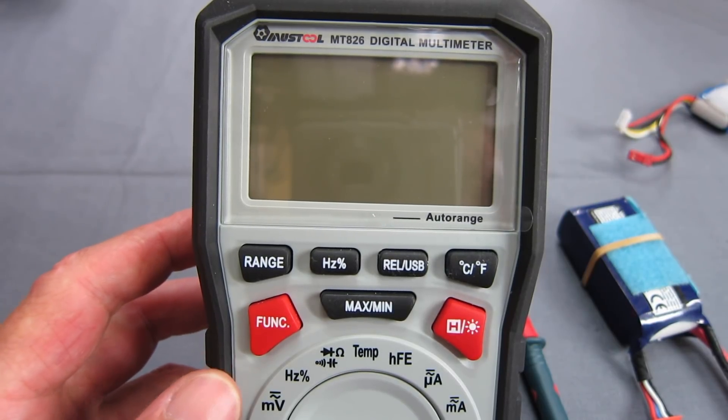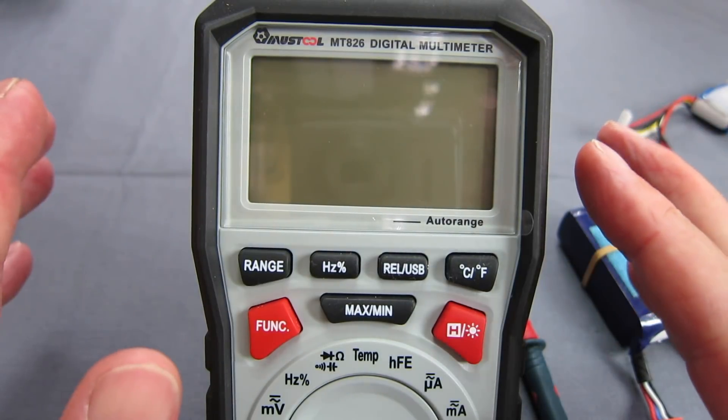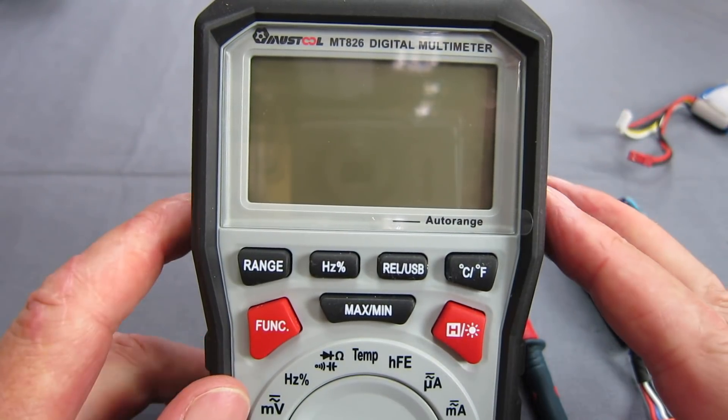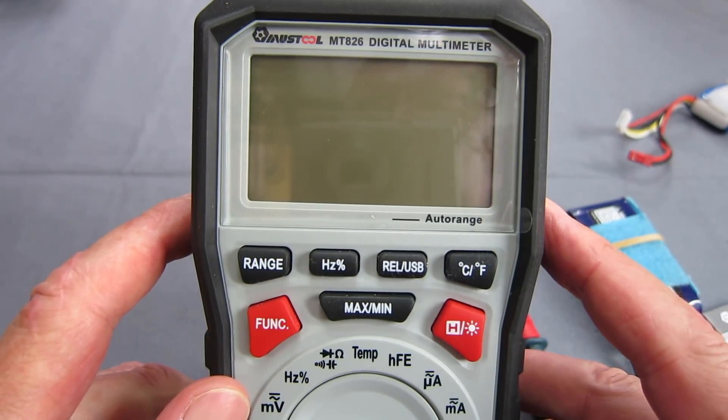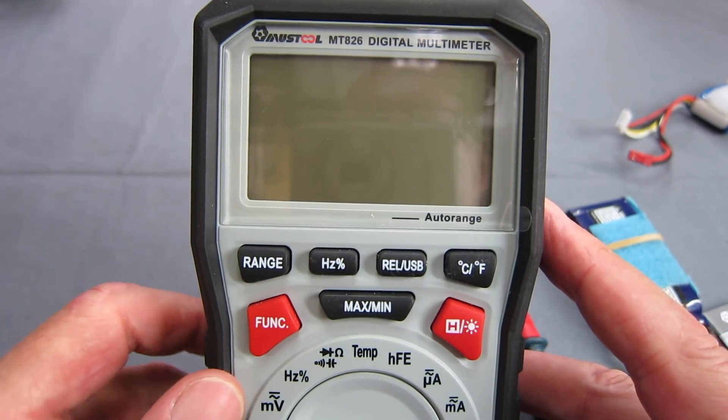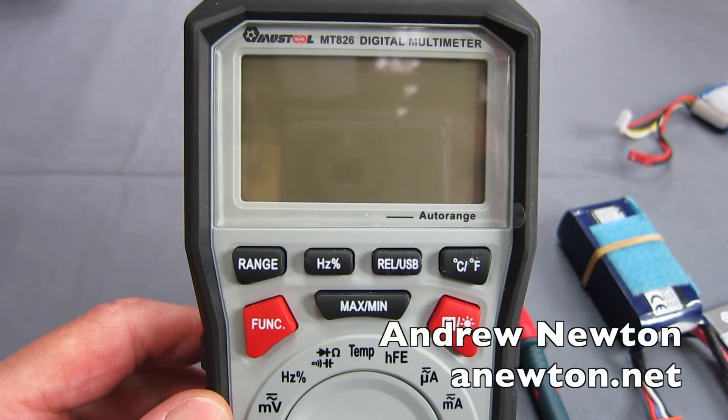I'll have to investigate it more deeply because it can do way more stuff than I actually need. But I'm sure I'll use it as I get to know it a bit more. So that's the Mustool MT826 digital multimeter from Banggood. Looks like a beauty to me. Thanks for watching.